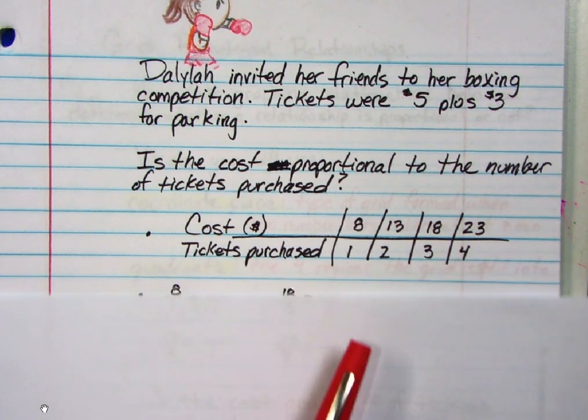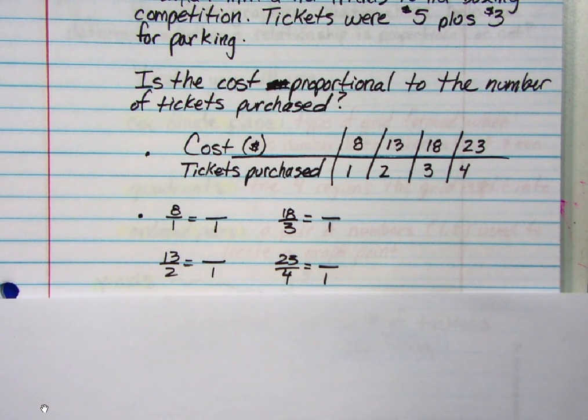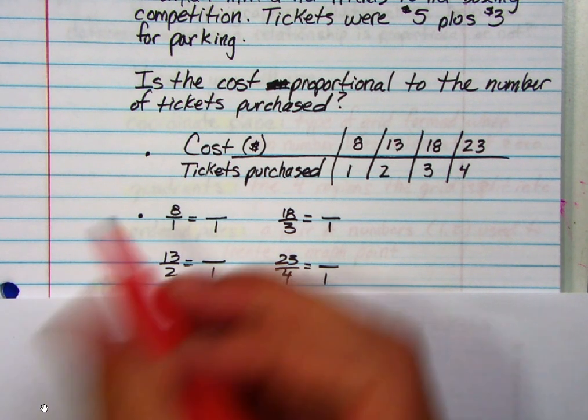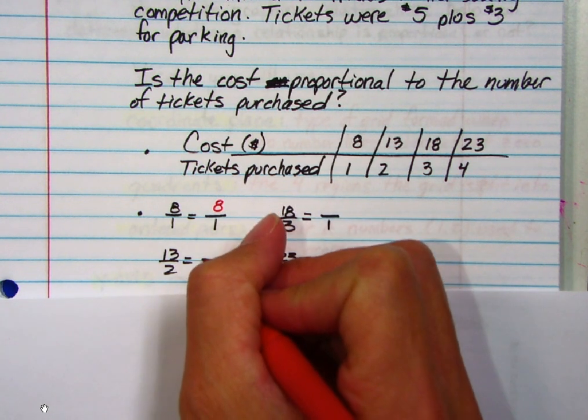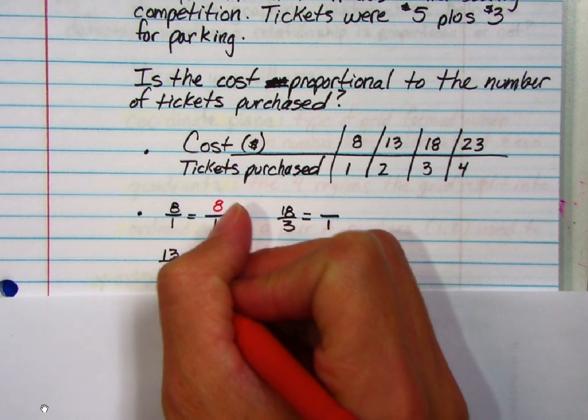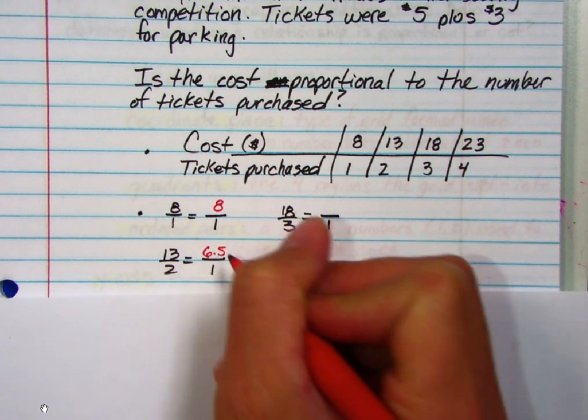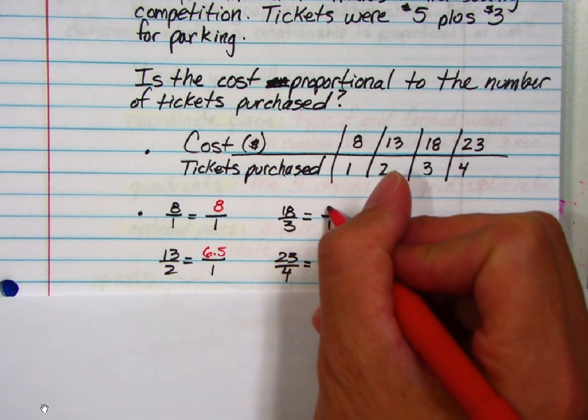So this is my chart. Now it's a matter of finding out what their actual unit rates would be. Eight over one, that's straightforward. That's eight over one. Thirteen over two, that doesn't go in evenly. So let me think. Two goes into twelve, six times. It would be six and a half.